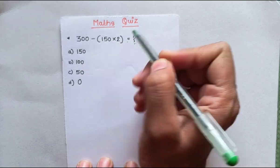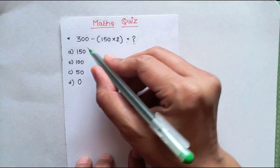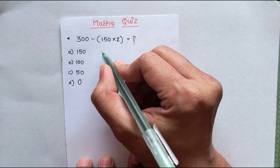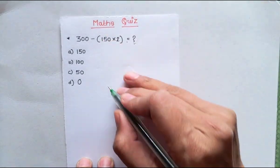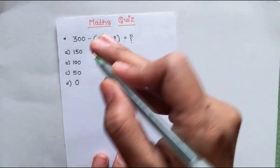We will try to solve this equation. In math, there is a rule: whenever multiplication, division, addition, and subtraction are coming in one equation, then how will we start? First we will do division or multiplication.